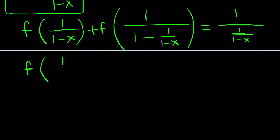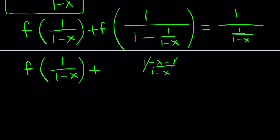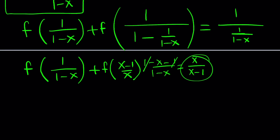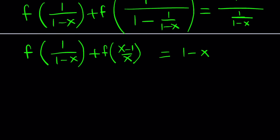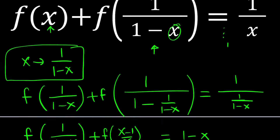Let's see what this gives us. f(1 over 1 minus x) plus... Now I need to simplify. If you make a common denominator, you get 1 minus x minus 1 divided by 1 minus x. The 1 cancels out, giving negative x over 1 minus x. If you negate numerator and denominator, and remember it's f of 1 over that, it's going to be flipped — giving f of (x minus 1) over x. On the right-hand side, you get 1 minus x. Call this equation number 1 and this equation number 2.